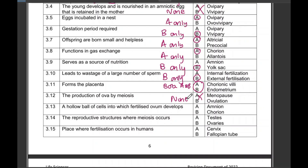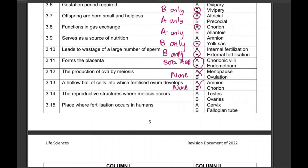'A hollow ball of cells into which a fertilized ovum develops' — question 13 — that is none, because that is a blastula. Both options given are incorrect.